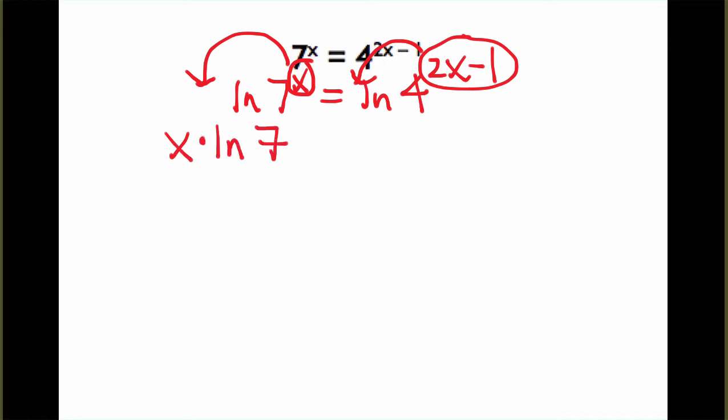So, on the left it becomes x times the natural log of 7 and on the right it becomes 2x minus 1 times the natural log of 4.